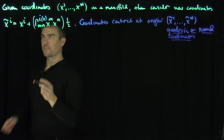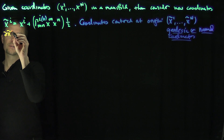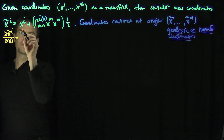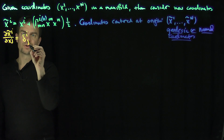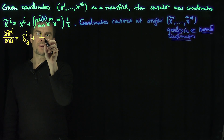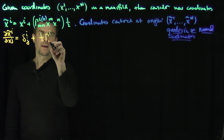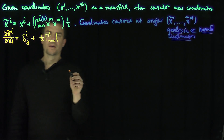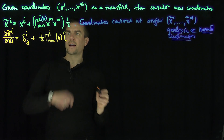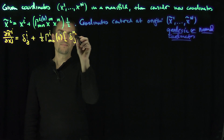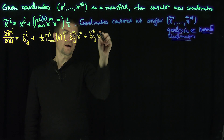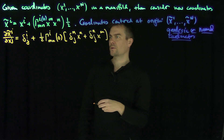Let me do the derivative with respect to x_j. So partial x_i tilde over partial x_j: if I differentiate x_i with respect to x_j, I get delta_ij plus one-half times gamma_imn evaluated at zero. Then by the product rule, differentiating x_m gives delta_mj times x_n, and differentiating x_n gives delta_nj times x_m.